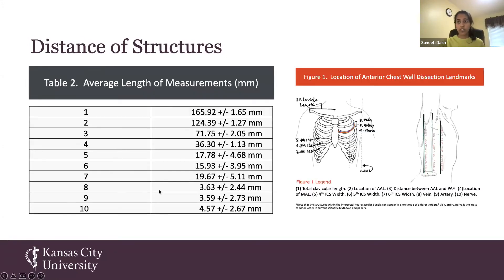I want to draw your attention to data points 8, 9, and 10, which show the average distance of the vein, artery, and nerve within the intercostal neurovascular bundle. Each of those values has a positive denotation, meaning they ran within the intercostal space and not within the costal groove.